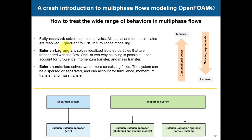We start to add models. We can have the Eulerian-Lagrangian approach where Lagrangian particles move with an Eulerian continuous phase. In this approach we can have one-way, two-way, or four-way coupling — meaning the flow moves the particles, or the flow moves the particles and the particles simultaneously modify the flow, and also particles can rotate. Then you can have the Eulerian-Eulerian approach where you solve two or more co-existing fluids. As you go toward fully resolved, you increase computational cost but reduce modeling requirements.